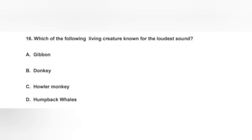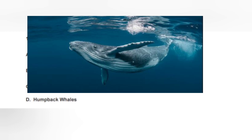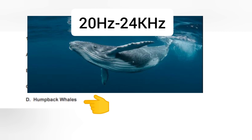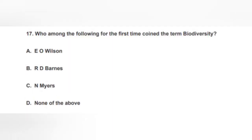The next question: Which of the following living creatures is known for the loudest sound? The options are gibbon, donkey, howler monkey, or humpback whale. The correct option is D — humpback whales. They are known for their frequency ranging from 20 Hz to 24 kHz. Please comment on what the hearing range is for human beings.